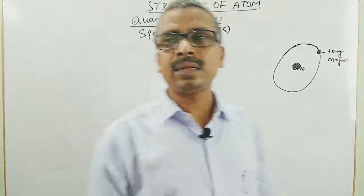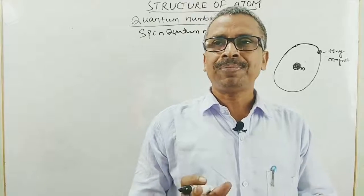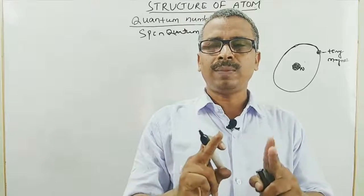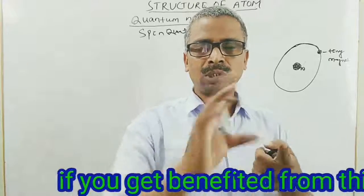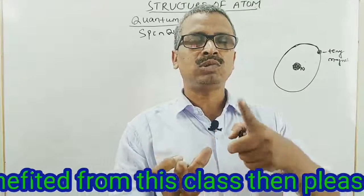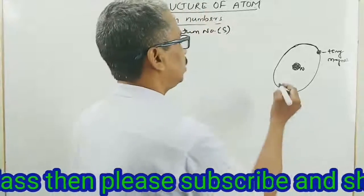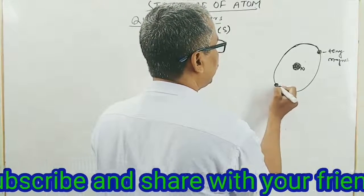Samajh kya, jab tiny magnet ke tarah kaam karta hai, toh jab ek orbital mein do electrons hai, so they should have the two spins. Agar yeh plus clockwise ghoomega toh dusra anti-clockwise ghoomega. Yanni agar yeh orbital mein do electrons hai...